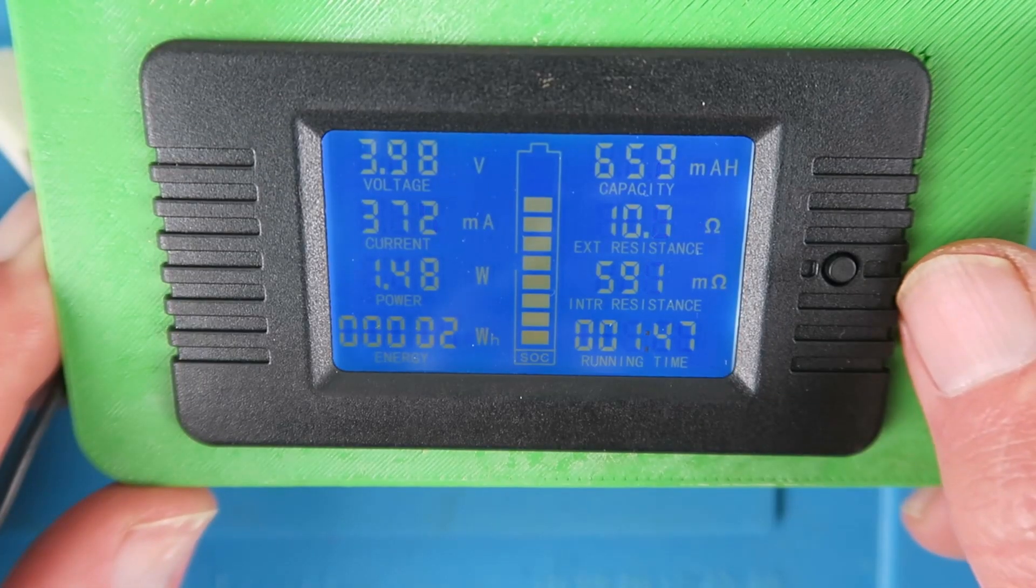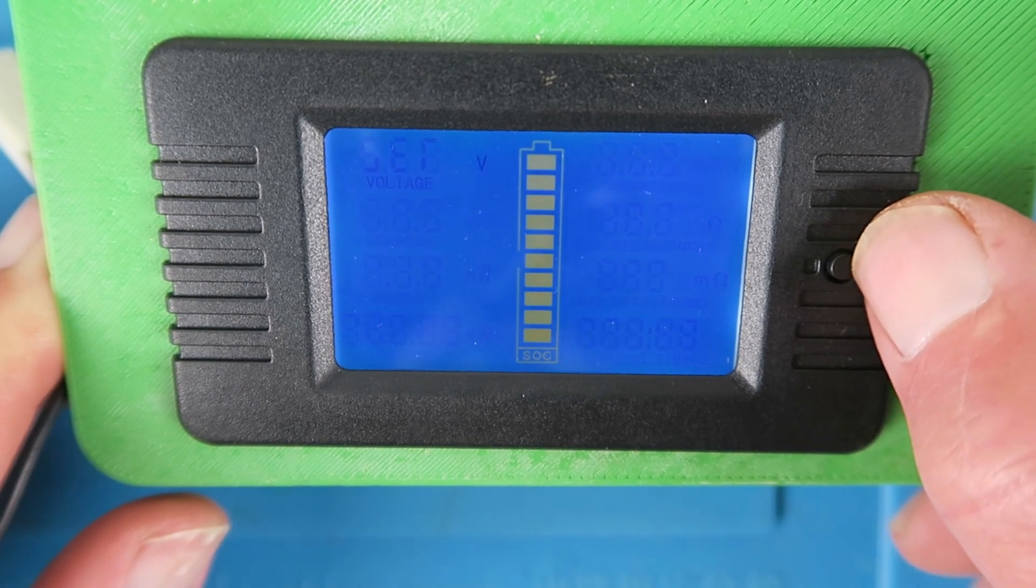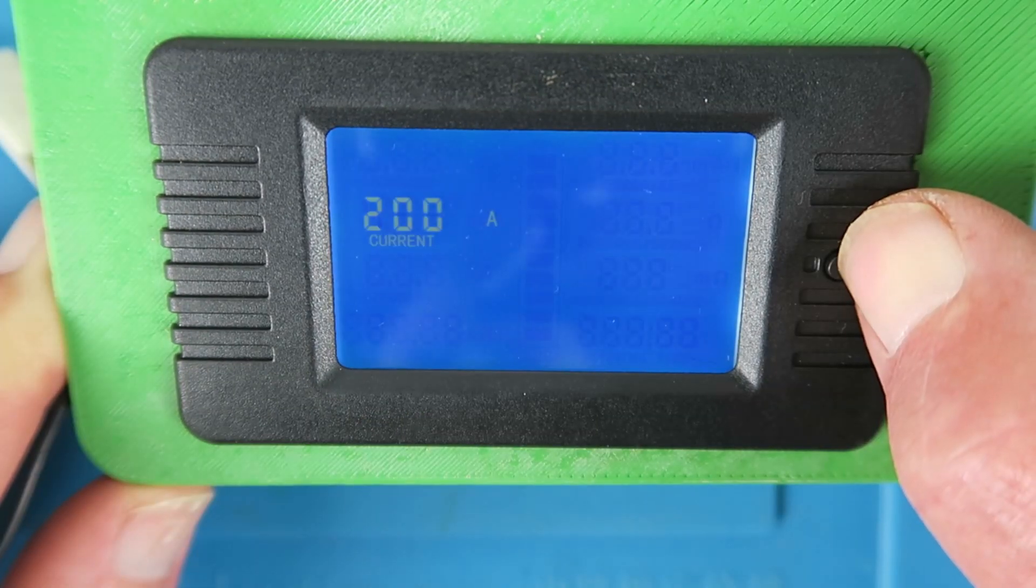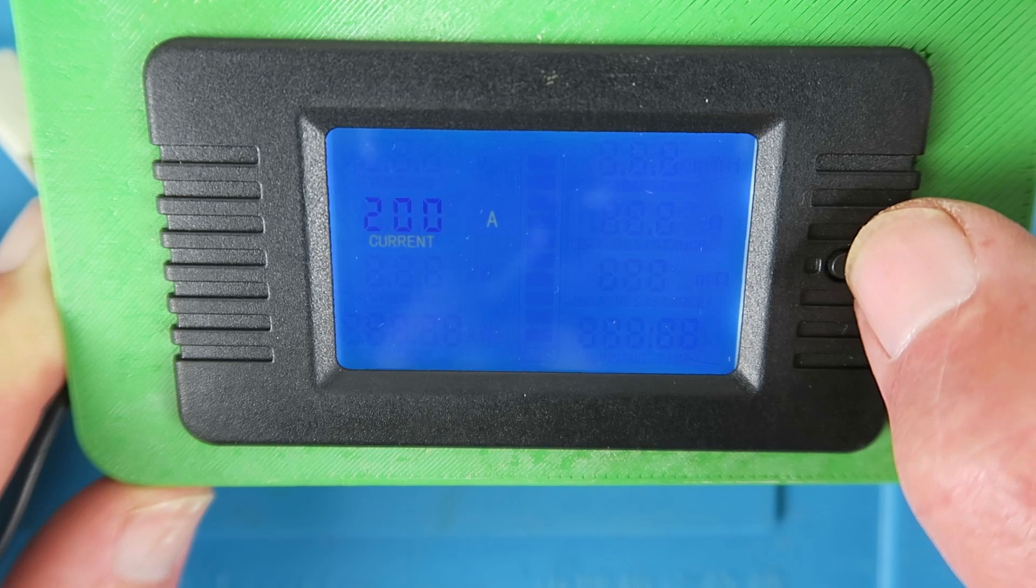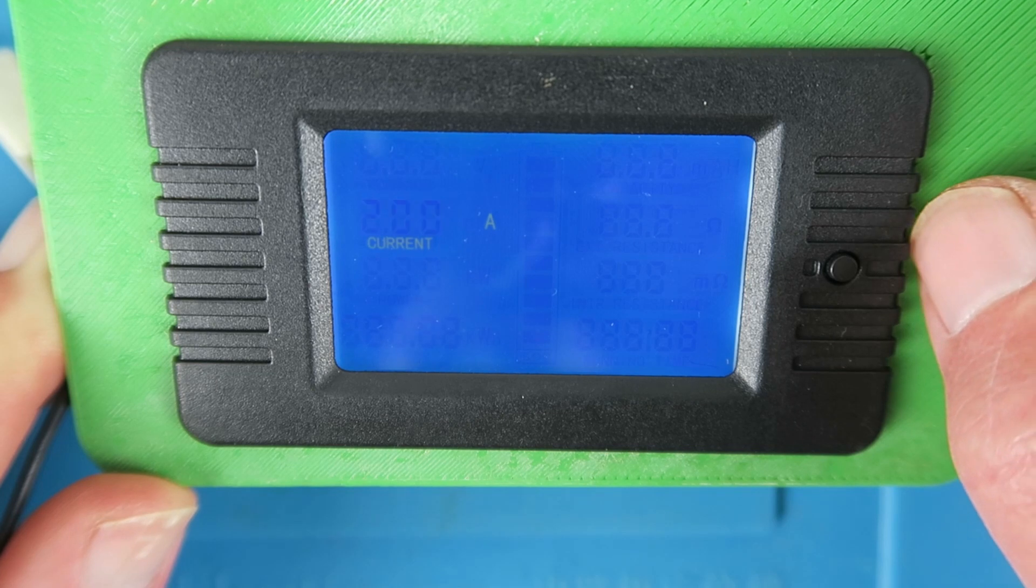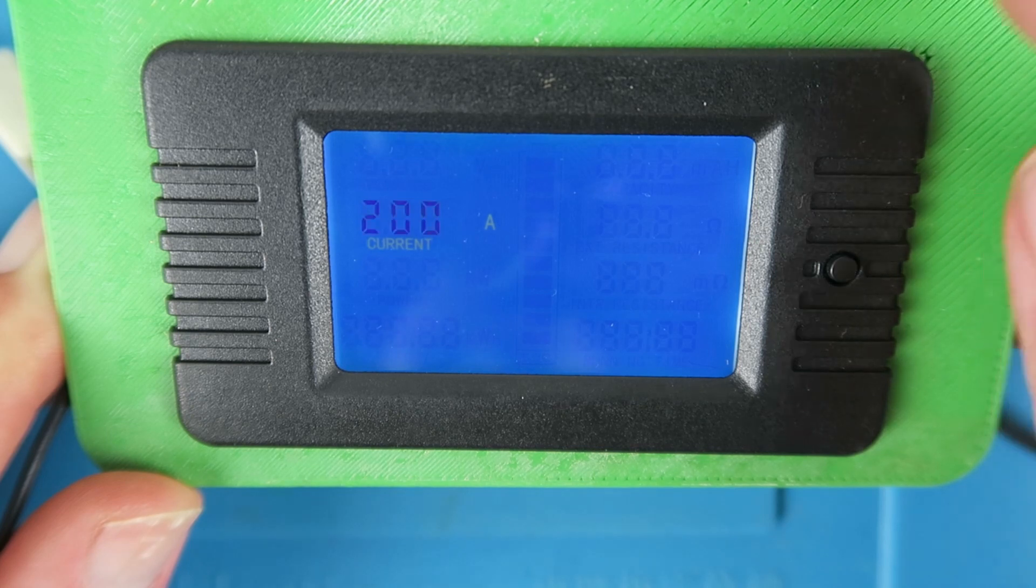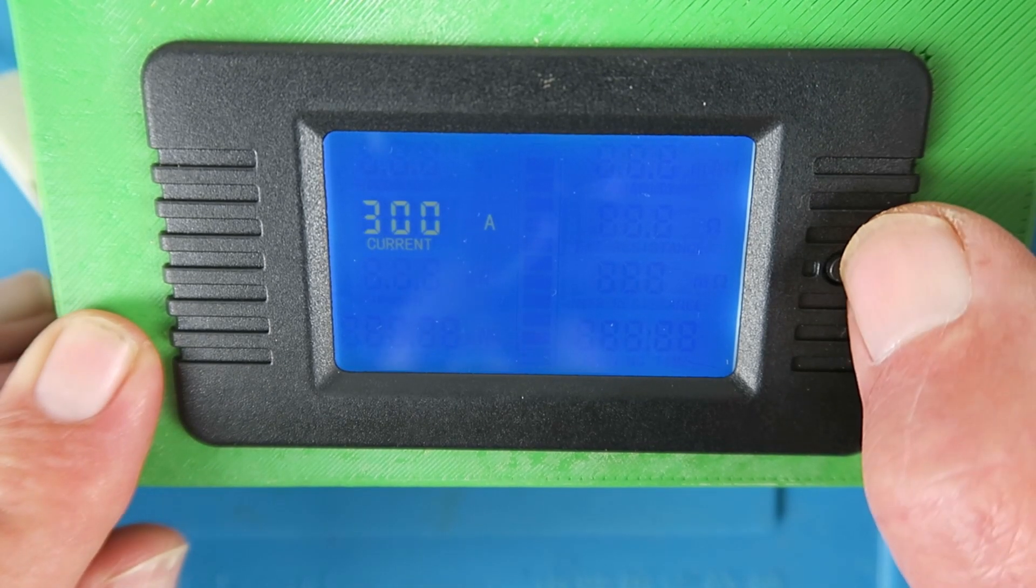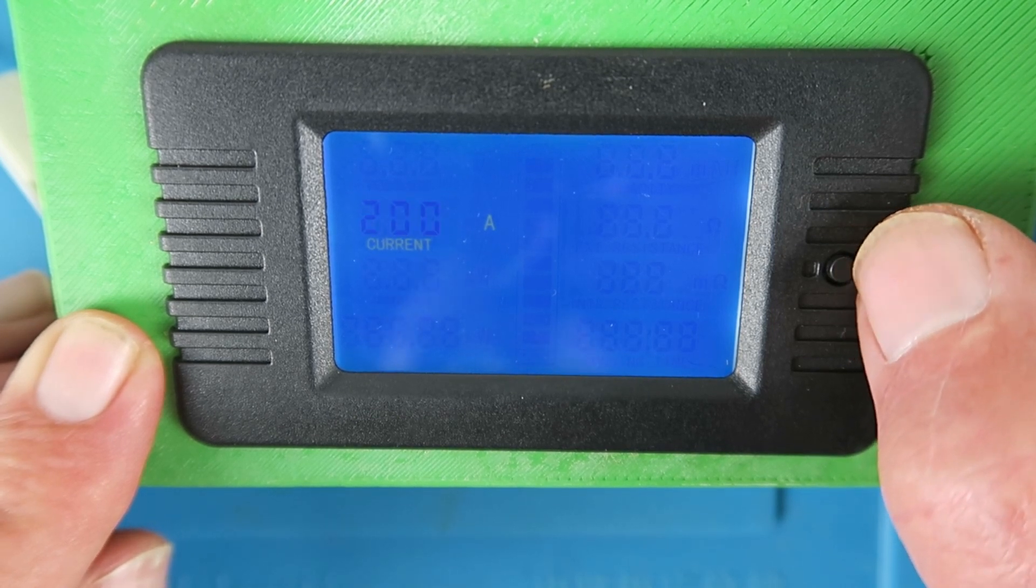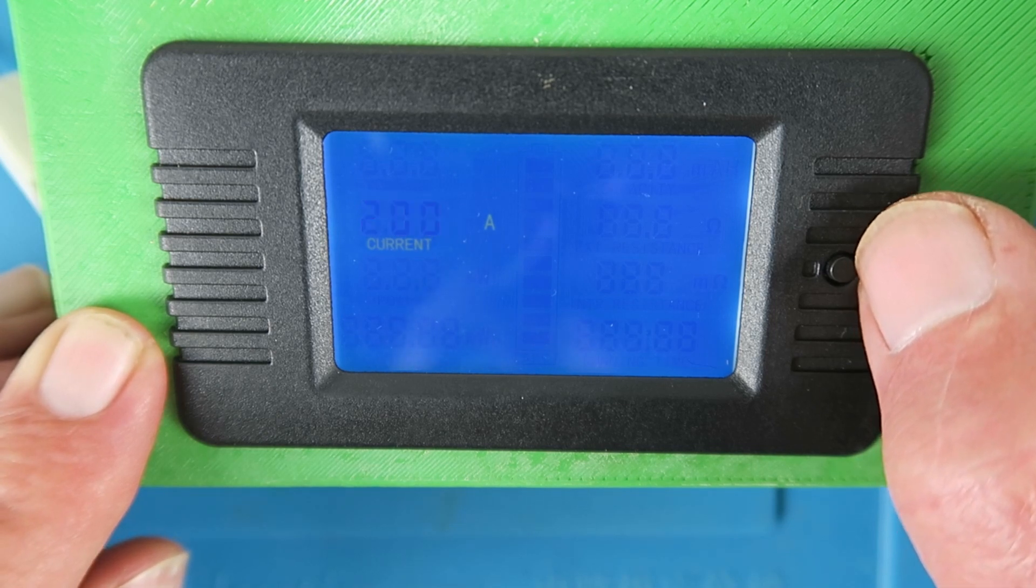Just before we move on then one other important thing that we need to change. Long press. Get into the menu here and it's this set current. Long pressing that gets us to a selection which is dependent upon which current shunt you have installed. In my case as I said this is a 200 amp shunt therefore we set that to 200. The other available options are 300, 100 and 50.